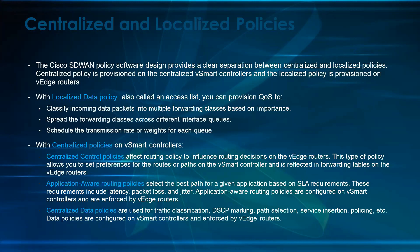The centralized policy on the vSmart — the centralized control policy — affects routing policy and influences routing decisions sitting on the vEdge router. This type of policy allows us to set the preference for routes or paths on the vSmart controller, and it is reflected as forwarding TLVs on the vEdge router. This policy sits on the vSmart, instructing the vEdge router on how to forward traffic and build out your control.